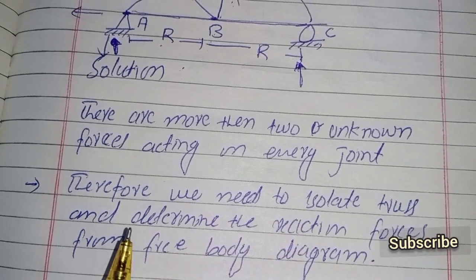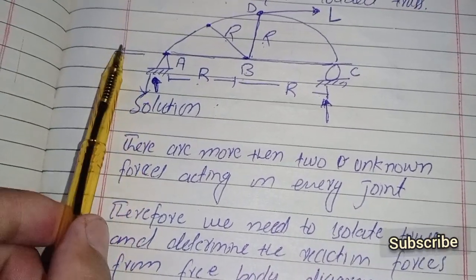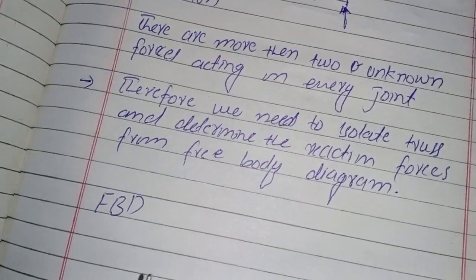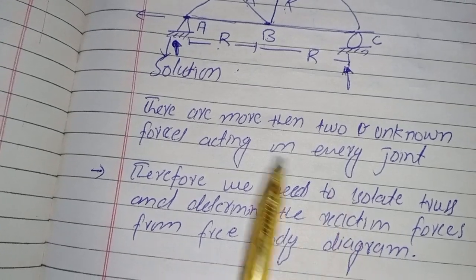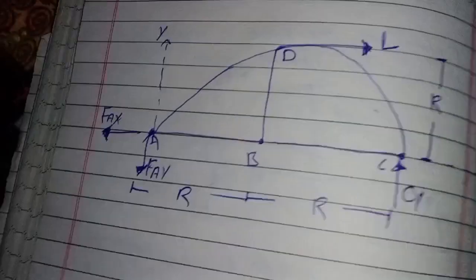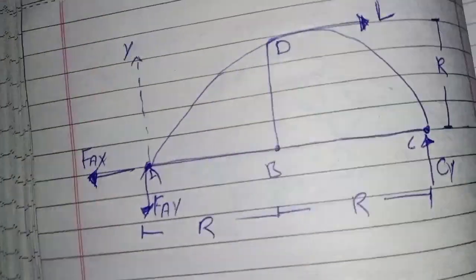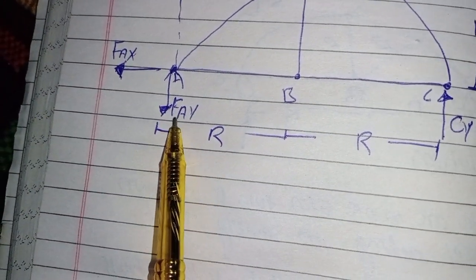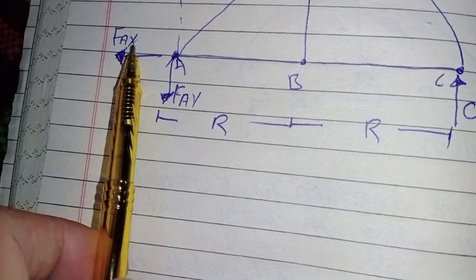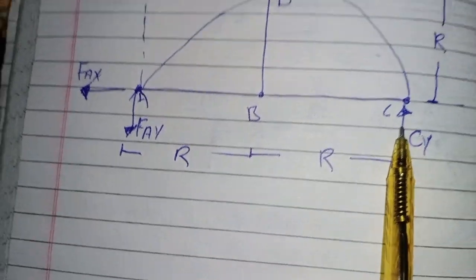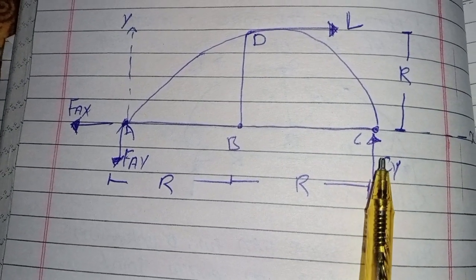First of all, we need to isolate this truss and find the reaction forces. We determine the reaction forces first, and then we take each joint and find the member forces. I will draw a free body diagram of this loaded truss. The reaction forces are F_ay, F_ax at the pin support, and F_cy at the roller support. A roller support can resist only one force, which is vertical in this case.